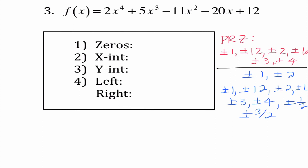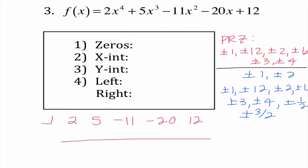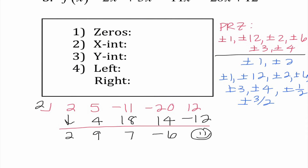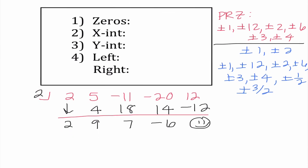Let's try this out. I'm going to say 2, 5, negative 11, negative 20, and 12 — and I'm going to start with 2. 2 times 2 is 4, I get 9; 9 times 2 is 18, I get 7; 7 times 2 is 14, I get negative 6; negative 12 — we have a winner. I want you to know I'm choosing this number because I know what's going to work. In actuality, if you don't have a graphing calculator, it really is a guess-and-check type thing.